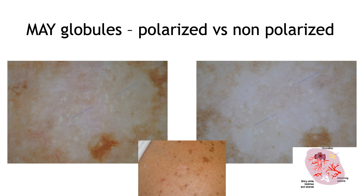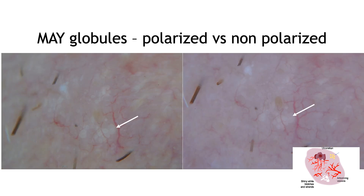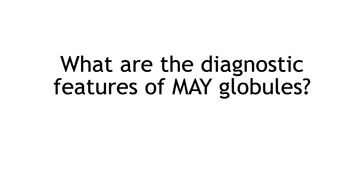Another example of an amorphous BCC. You can see arborizing vessels and a pink background, but you can also see these globules — white to yellow, arranged in clusters — seen both in polarized and non-polarized light.